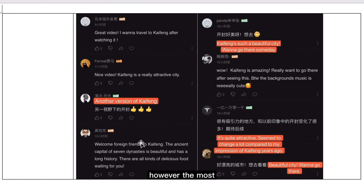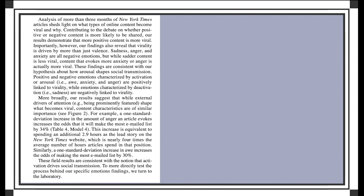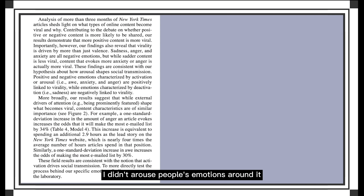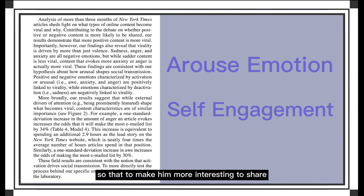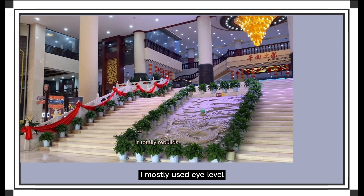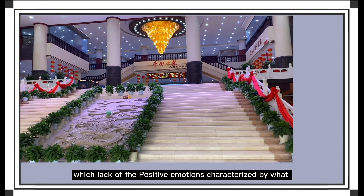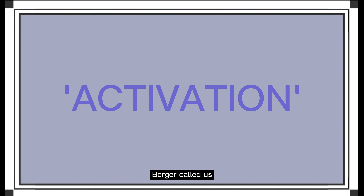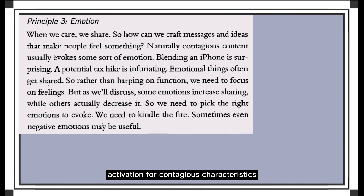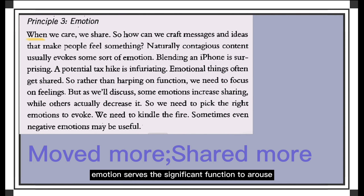However, the most important difference and weakness is that I didn't arouse people's emotions enough to make it more interesting to share. In other words, it has less self-engagement and visible symbols to be distinctive. You can see that I mostly used short and plain descriptions in my video, which lacks the positive emotions characterized by what Berger called activation. For contagious characteristics, emotions serve a significant function to arouse sympathetic feelings and thus increase sharing.